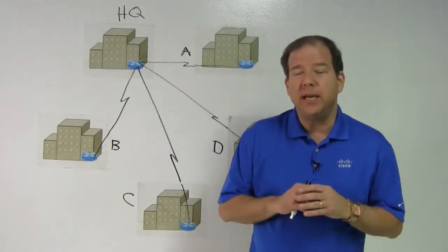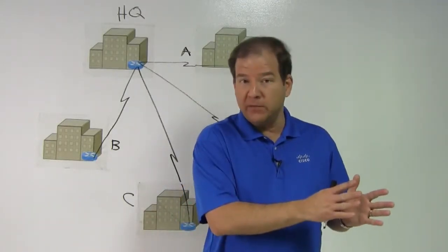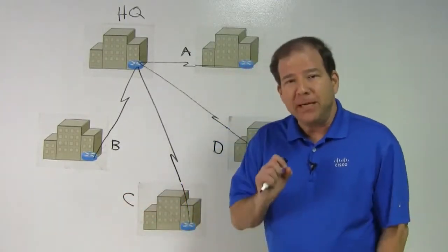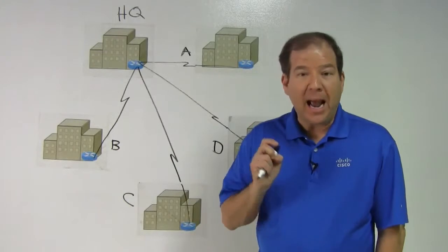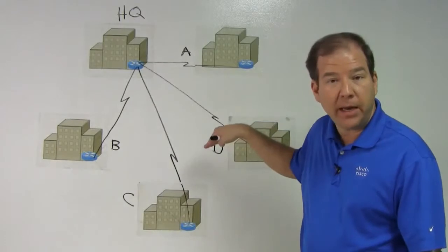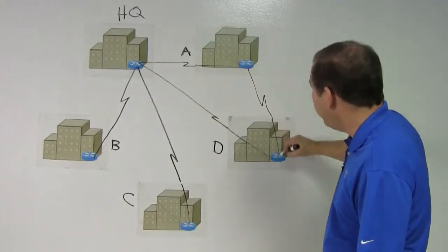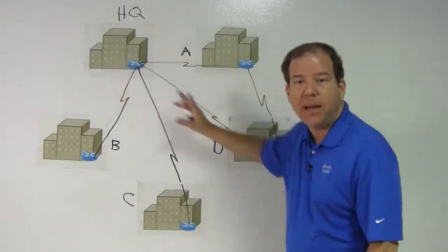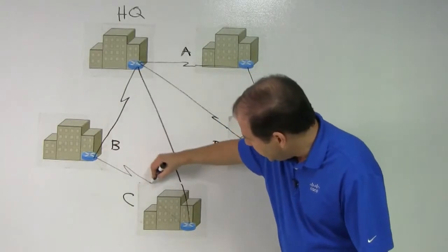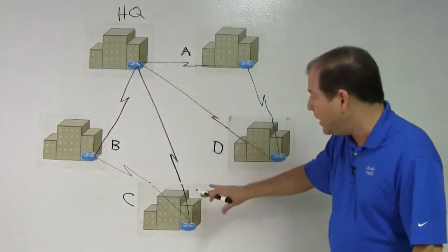What we can do instead is a compromise between hub and spoke at one end of the spectrum and a full mesh at the other end. We can strategically add links to a basic hub and spoke topology. Because there is frequent communication between A and D, let's add a link. That way we don't have to go from A to HQ back to D. There's frequent communication between B and C, so let's add a link. That way we don't have to go from B to HQ down to C.